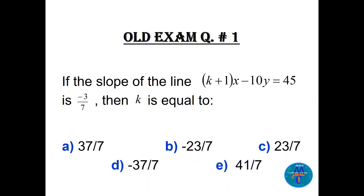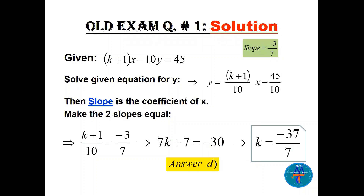What do we do? If you go back to lecture 21, you can see that to find the slope, if we have the equation, we need to solve for y. So we need to solve for y here. Take y to the other side, bring the 45, then divide by 10. So it becomes (k+1)/10 · x minus 45/10. The slope is the coefficient of x after solving the equation for y.